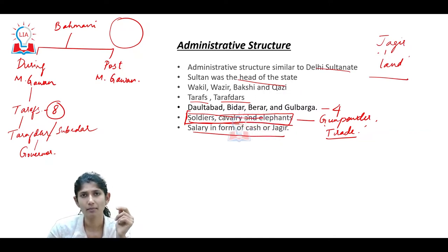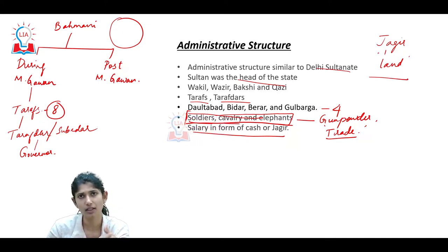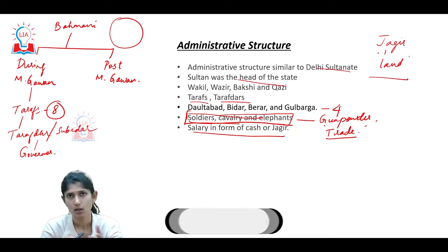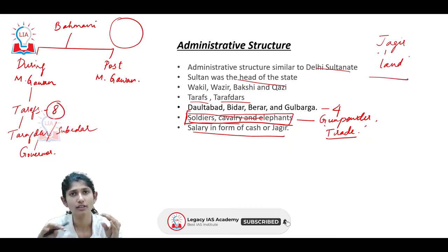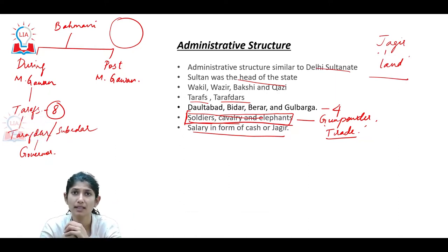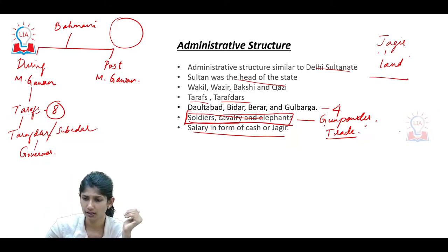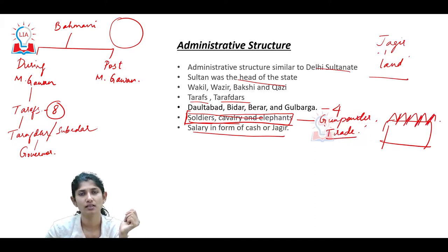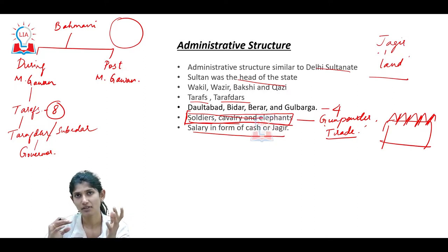The Bahamani Empire had a strong military system. They also used cannons. It is said that Hassan Gangu, the founder of the Bahamani Empire, when he captured the Gulbarga fort - which was the initial capital - placed huge amounts of cannons on the fort. The Gulbarga fort was heavily fortified, with arms and fortification on a heavy-duty scale, indicating their capital city was well-secured.